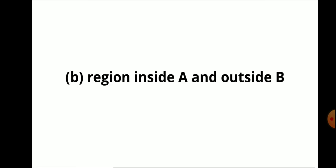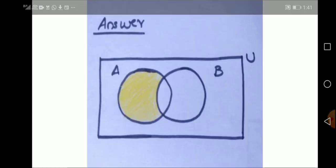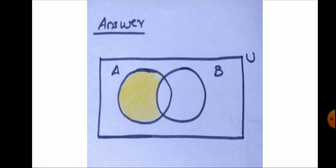Second case, region inside A and outside B. Region inside A and outside B means shade the region inside A and then outside B. Take the region where both the colors intersect. So it is the total answer.